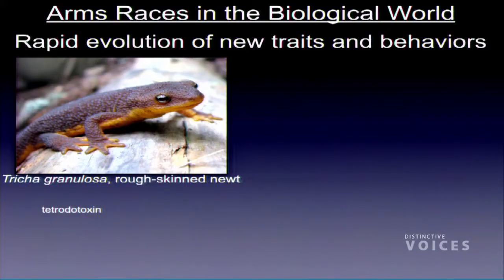Arms races occur between nations, but they also occur in the biological world. In biology, instead of new weapons and technology, we use the terms new traits and behaviors — pathways and mechanisms that evolve over time. The great thing about evolutionary concepts is they can happen on the ecosystem level, the organismal level, or on the cellular, molecular, even subatomic level with protein evolution. The concepts remain the same no matter what level you're looking at.